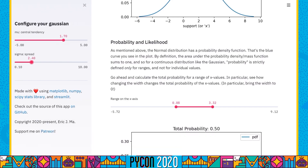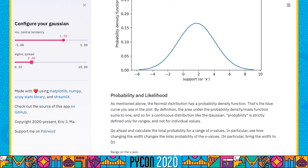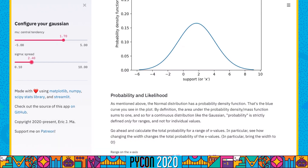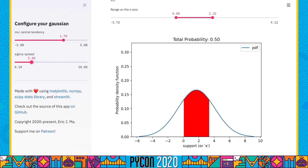If the total area under the curve sums to 1 — that is, from negative infinity to positive infinity — then we can talk about the probability of a range of values under the curve. If we slice out a bunch of area under the curve, we can talk about its probability: the fraction of total area under the curve that it occupies, which gives us a probability measure.